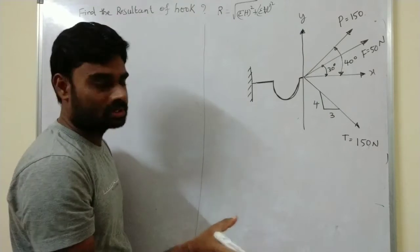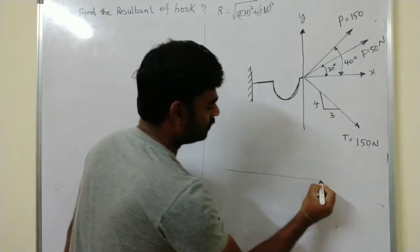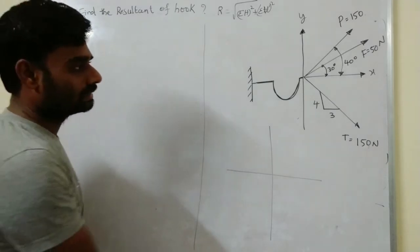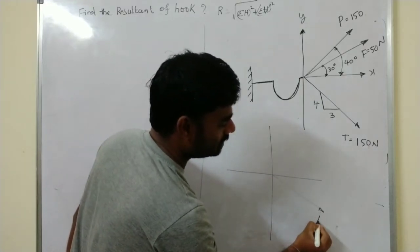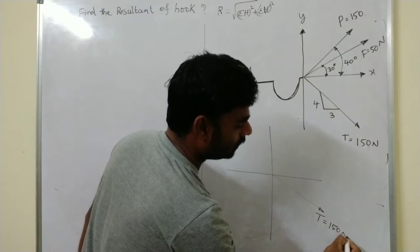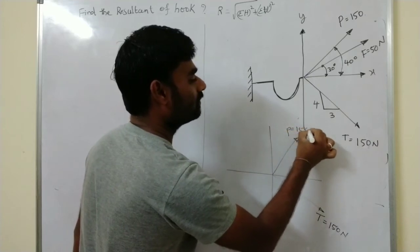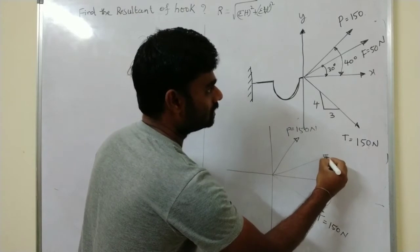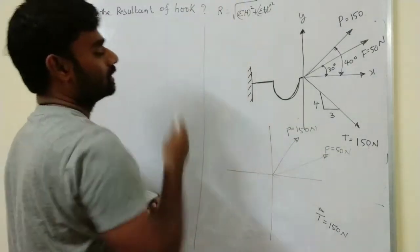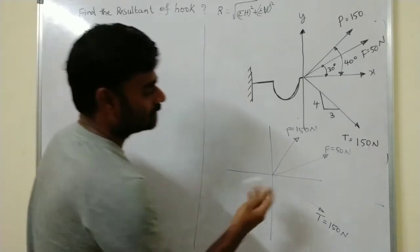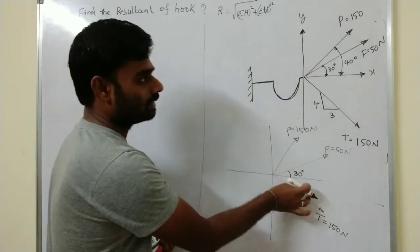First, draw the resultant forces on a line. Three cables are connected: the first one is P equal to 150 Newtons, the second one is also P equal to 150 Newtons, and the third one is F cable equal to 50 Newtons. Force F makes 30 degrees to the horizontal line, that is the x-axis.